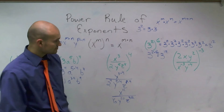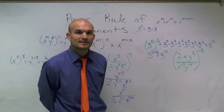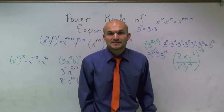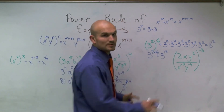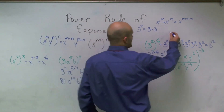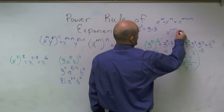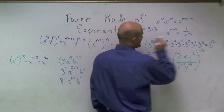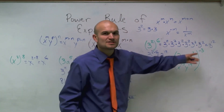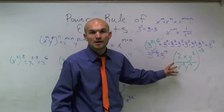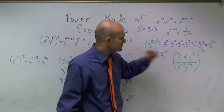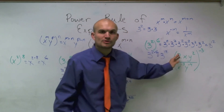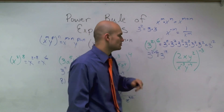Now, to complete this next problem — notice it involves a negative exponent. Remember the negative exponent property: x to the negative m equals 1 over x to the m. Instead of changing things up right away, what I'd like to do is distribute using my power rule first, and then change the negative exponents.